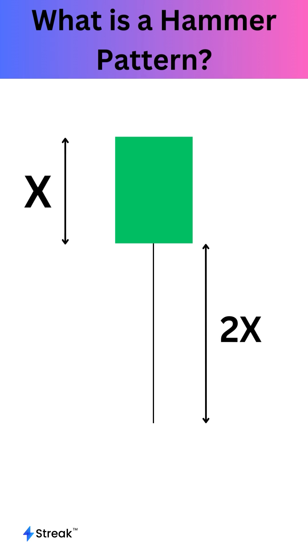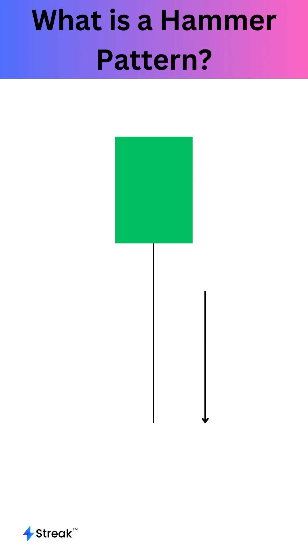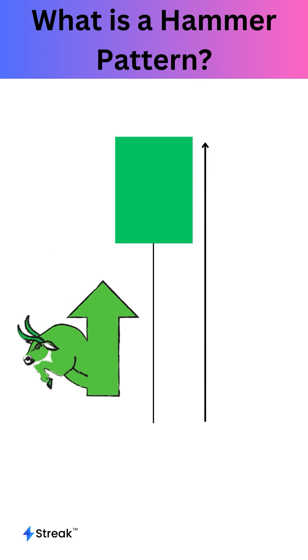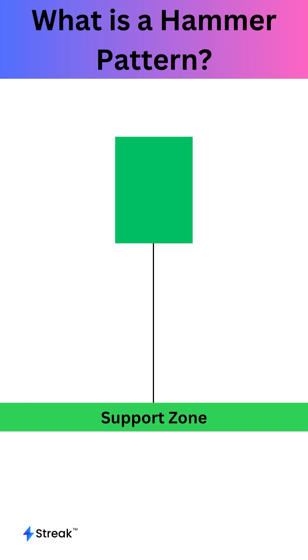The hammer pattern indicates that the sellers pushed the prices down during the trading session, but the buyers came in and drove the prices back up, showing strength and optimism. The pattern is more effective if it is formed near a support level after a downtrend.